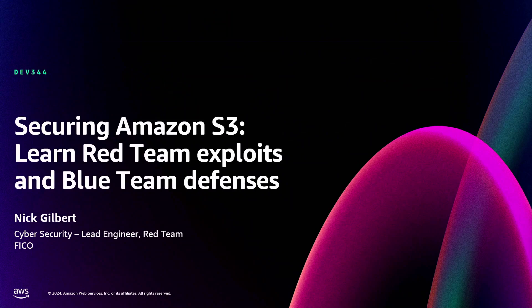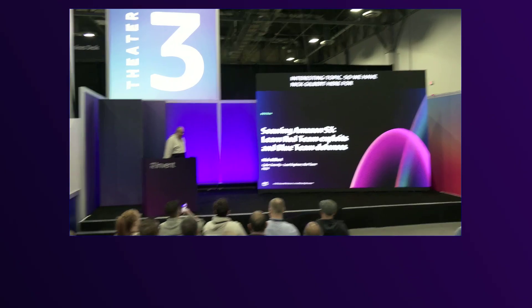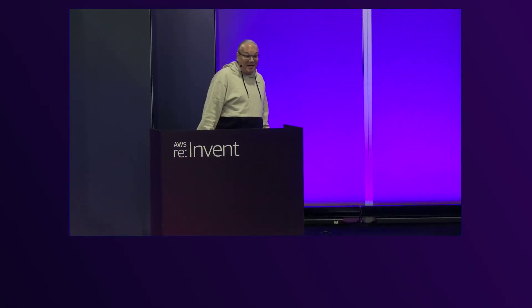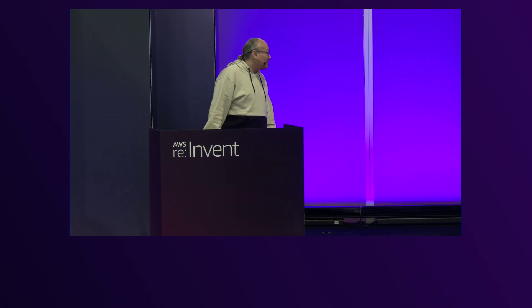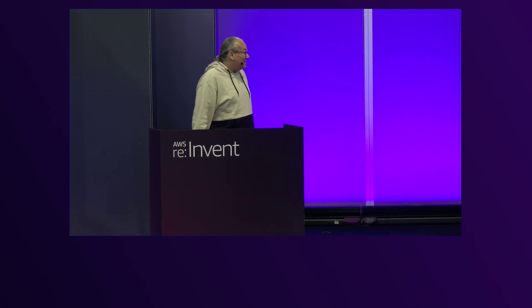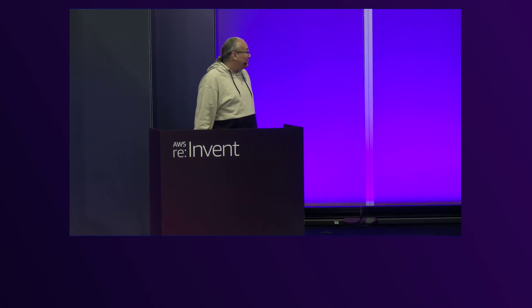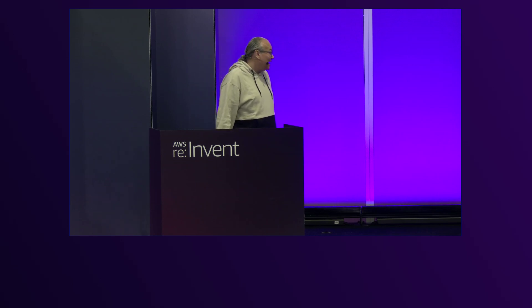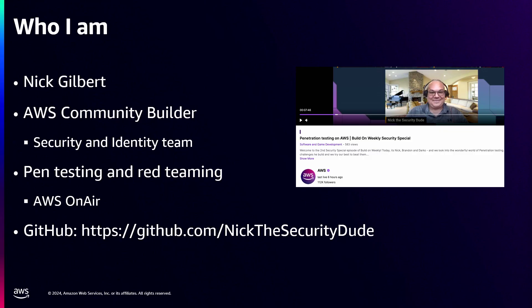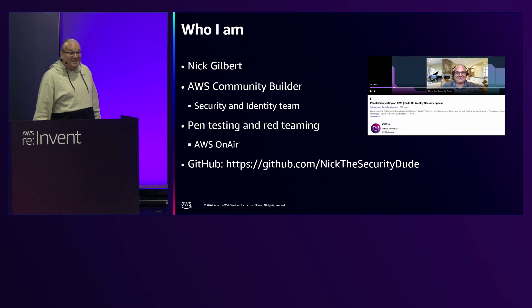Thanks for coming out. We're going to talk about securing Amazon S3, red team exploits, and blue team defenses. I'm Nick Gilbert. I'm the lead security engineer at FICO, and I'm also an AWS community builder on their security and identity team. You may have seen me previously on AWS on-air doing talks about pen testing and red teaming.